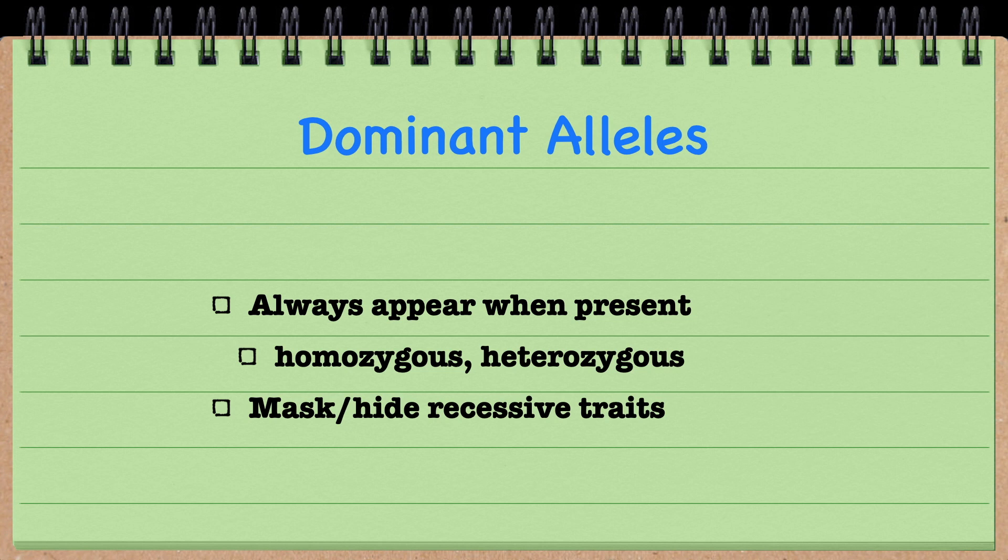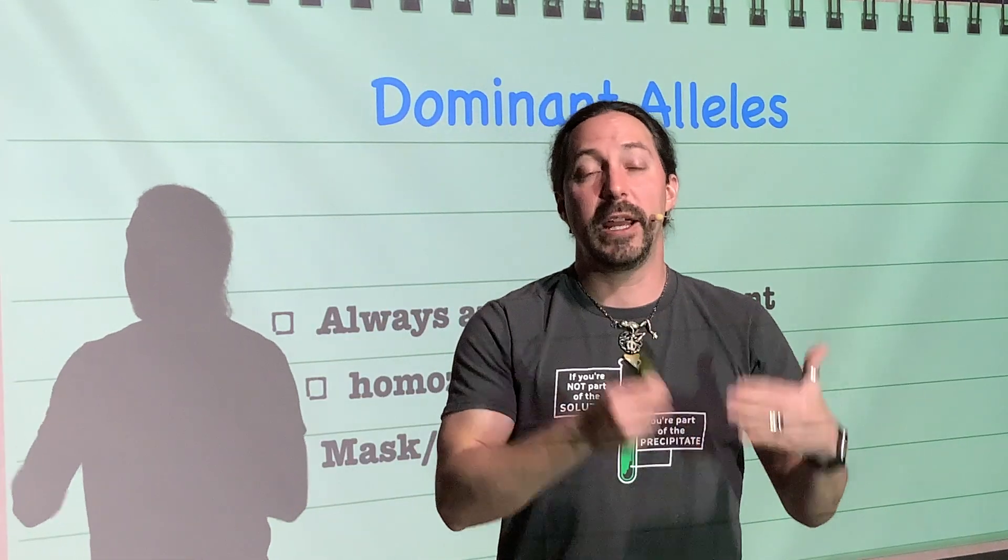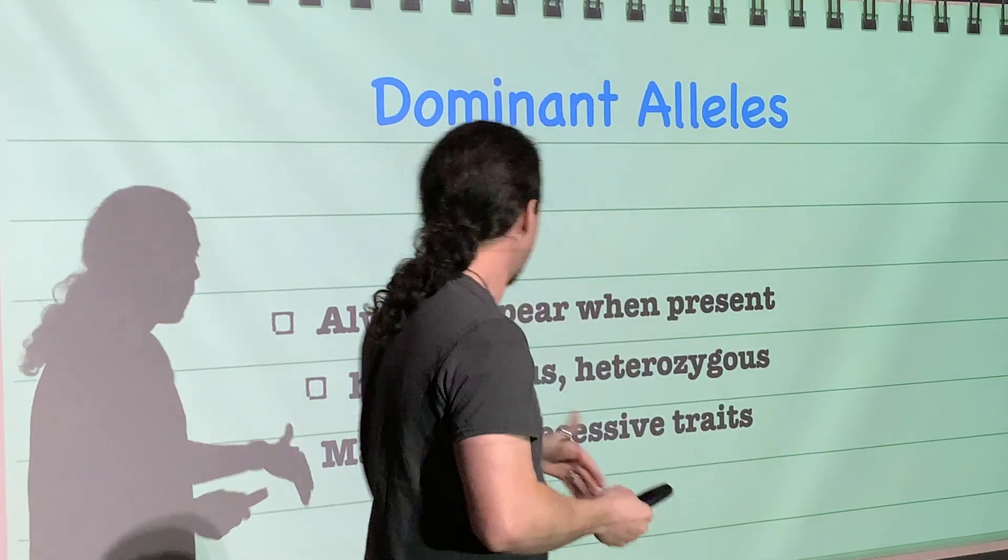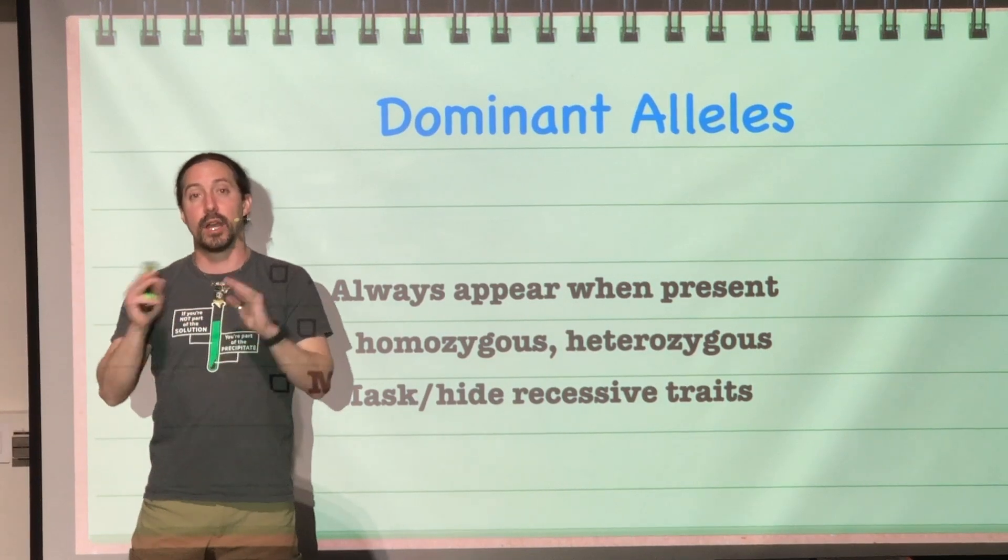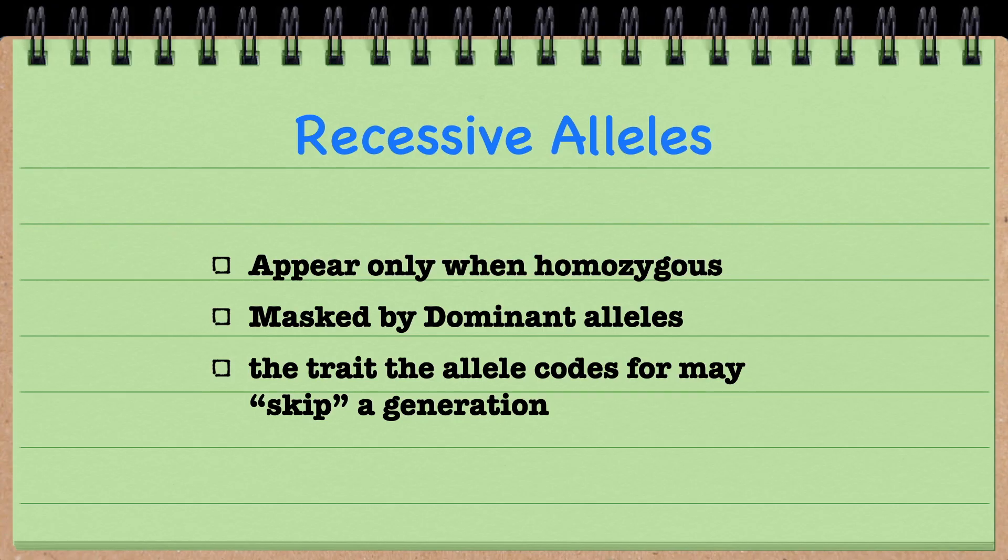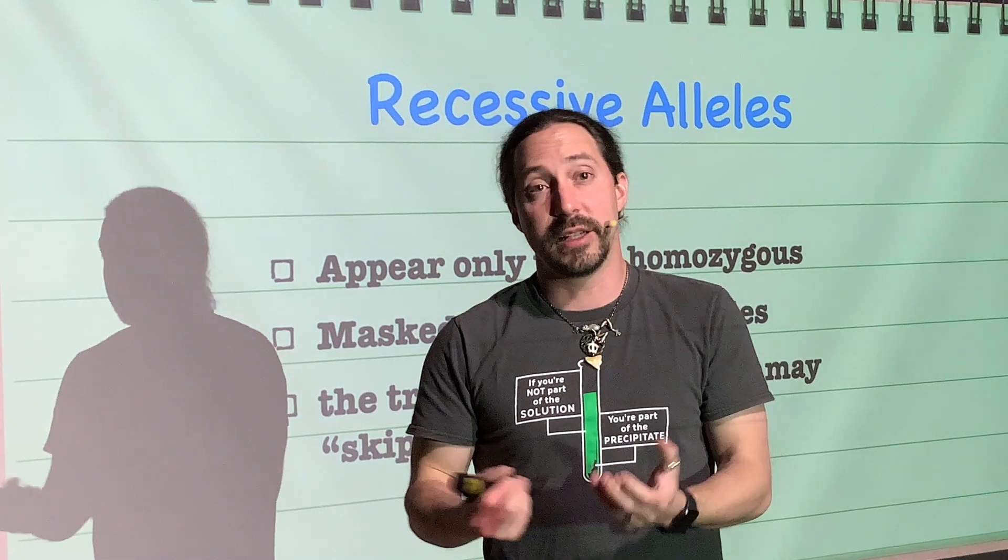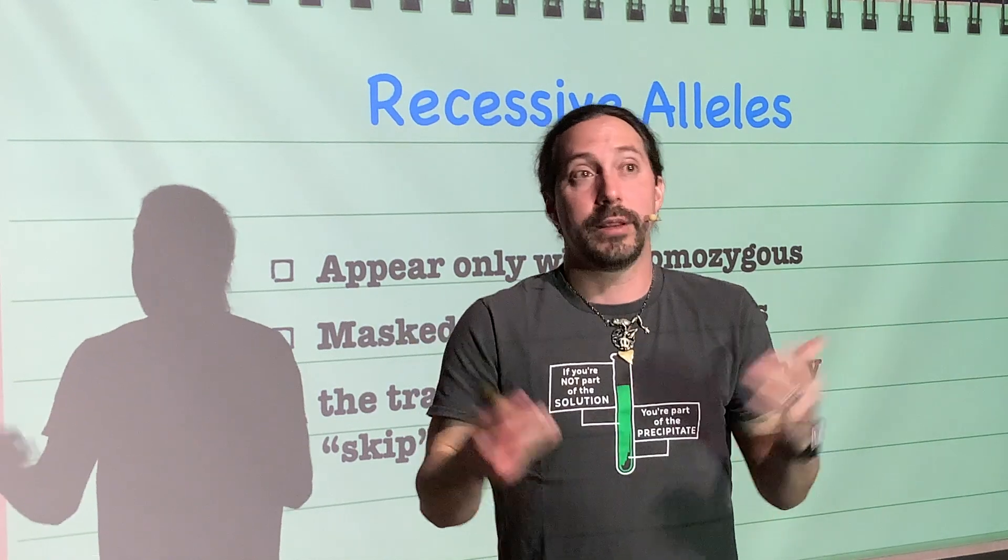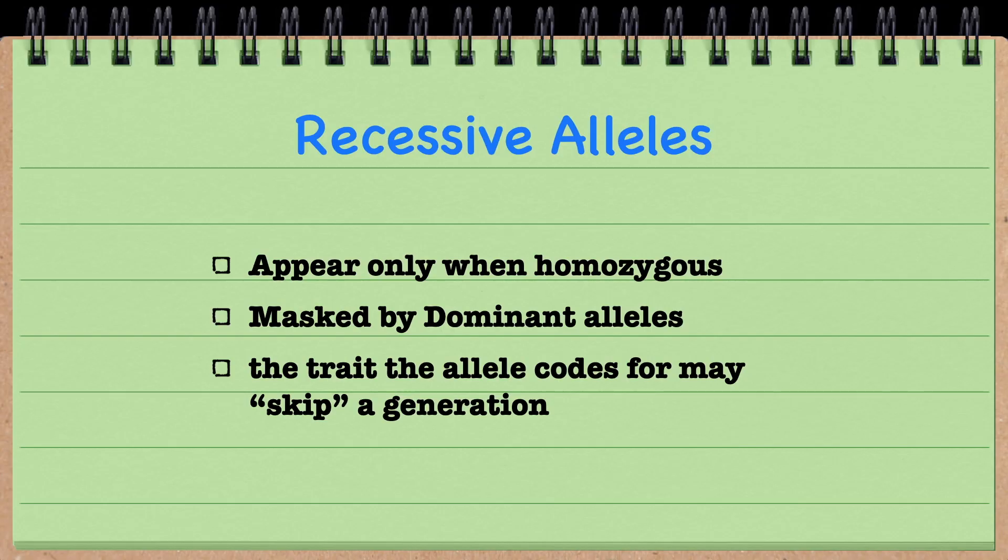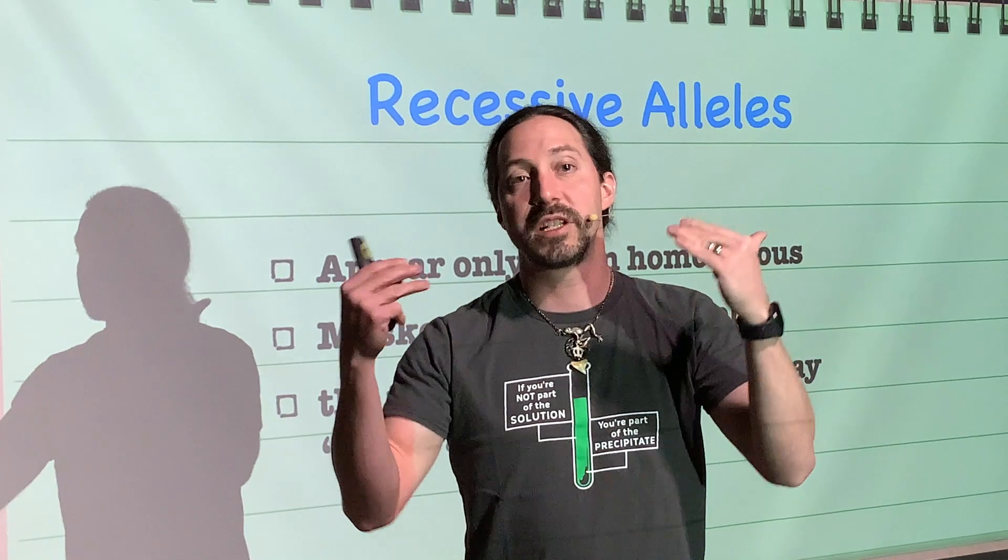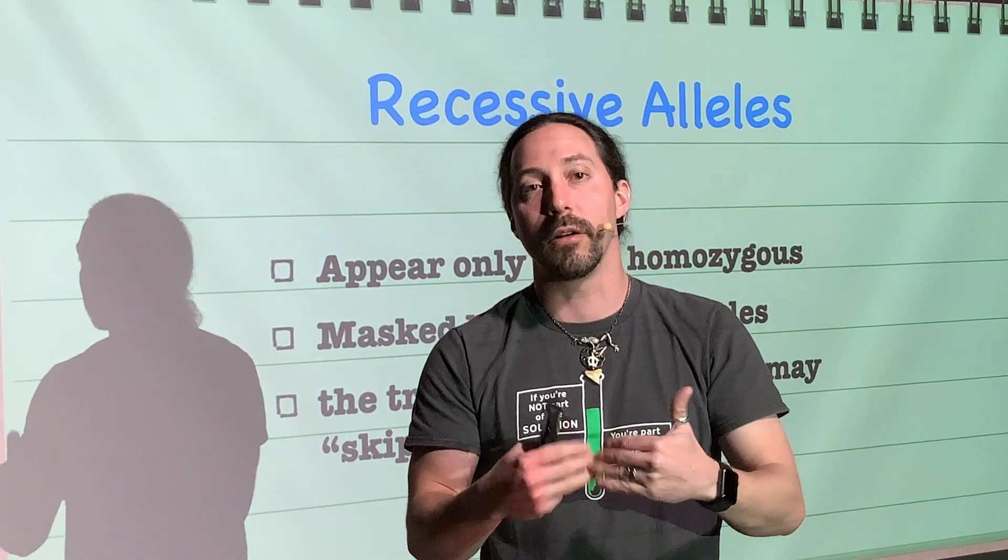Dominant alleles, like the yellow color, always appear when they're present. It doesn't matter if it's homozygous or heterozygous for that trait—it will always show up if that allele is dominant. Dominant alleles mask recessive alleles. Recessive alleles only show up if they're homozygous—if they're the only alleles present within that organism. The green trait, as we saw, skipped a generation, which is very common for recessive traits. Recessive alleles can get masked and hidden in one generation only to appear in another generation.